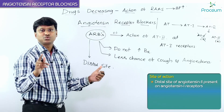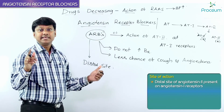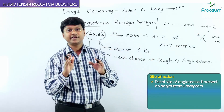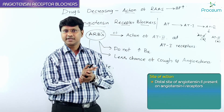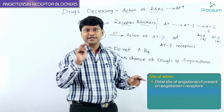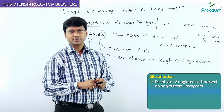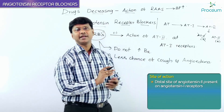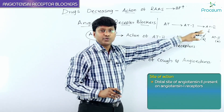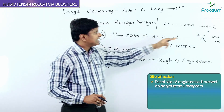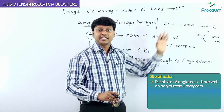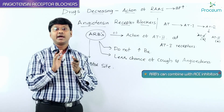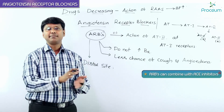Because ARBs act at a distal site, they inhibit the RAS pathway even for Angiotensin 2 generated by the non-ACE pathway. Angiotensin 2 is formed by two pathways: the kymase pathway and the non-ACE pathway. Since ARBs inhibit Angiotensin 2 regardless of its source, they inhibit both pathways, which is why ARBs can be combined with ACE inhibitors for various indications.